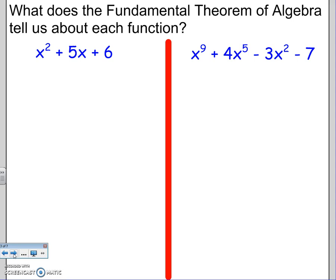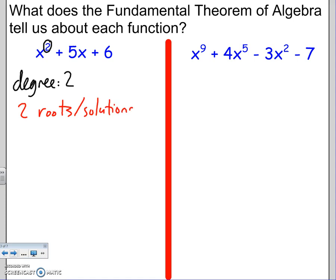First question: what does the Fundamental Theorem of Algebra tell us about each function? The Fundamental Theorem of Algebra talks about the degree — the exponent. Here I see the degree is 2. If the degree is 2, that means there are 2 roots or 2 solutions — 2 roots, solutions, zeros, or x-intercepts, although they could be imaginary.